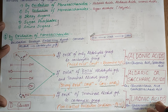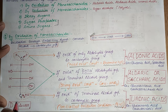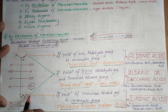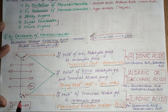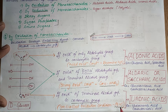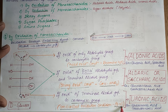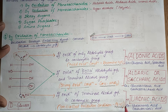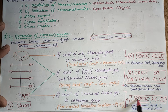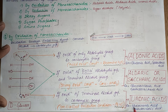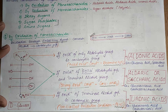Uronic acids are formed when the terminal alcohol group is oxidized to a carboxylic group under controlled oxidation conditions — that is, using a platinum-carbon catalyst. Examples include glucuronic acid and galacturonic acid.